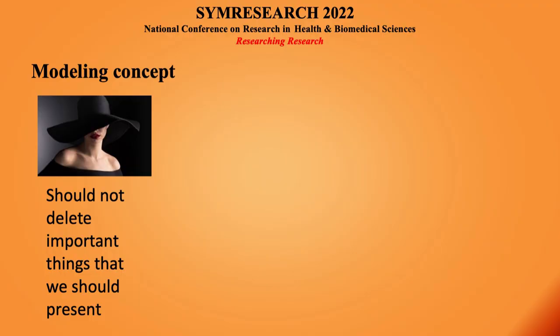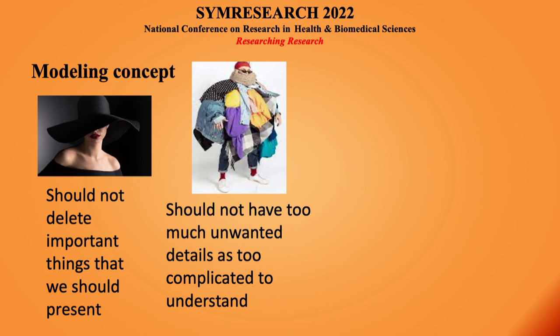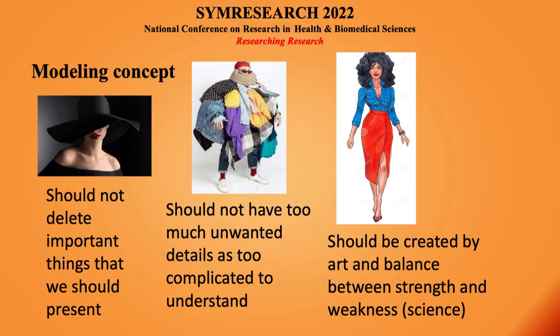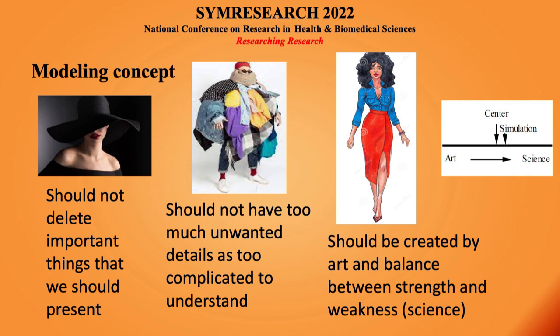You can see one model here. One peculiarity is that the modeling concept — our model — should not delete the important things that we should present. Here only the face is shown, but we don't know about the rest of the body. This model should not have too much unwanted detail as to complicate understanding. It should be created by a balance between the strengths and the weaknesses. To know when we are going towards the truth, we need to simulate the data, because there are different kinds of probabilities, and by doing sensitivity analysis and different kinds of simulation, we try to go very near to the truth.